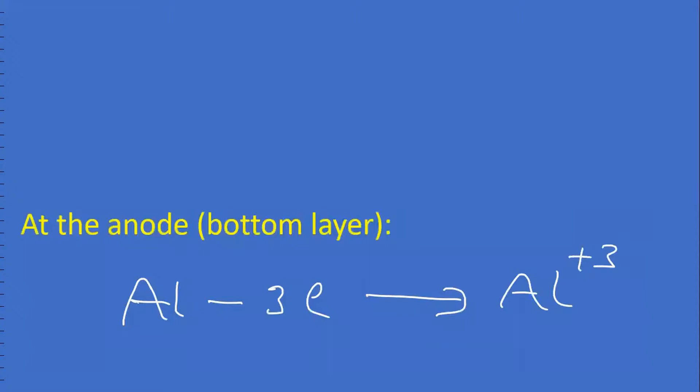At anode, the bottom layer, aluminum loses electrons. How many electrons? 3 electrons, forming Al3+ ions.